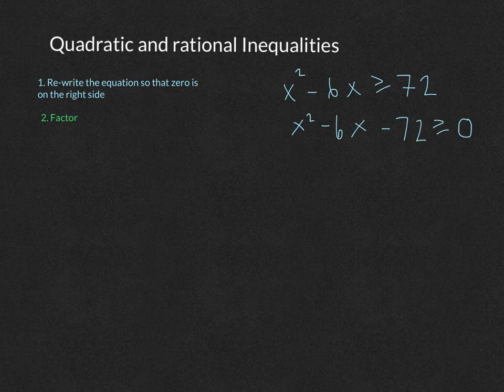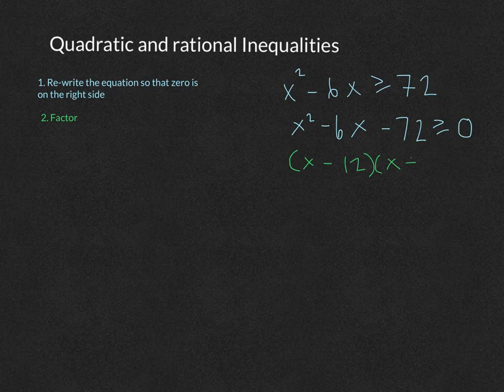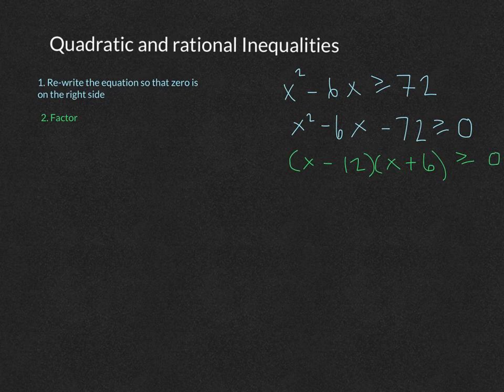So then the next step after you have everything on one side is that you want to factor. And if you have a rational expression, you would factor the numerator and the denominator. So this equation then factors into x minus 12 times x plus 6.